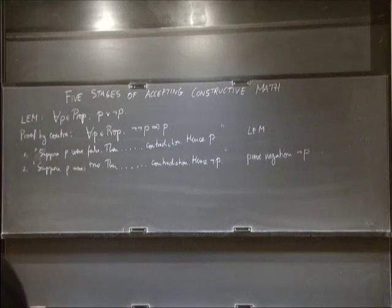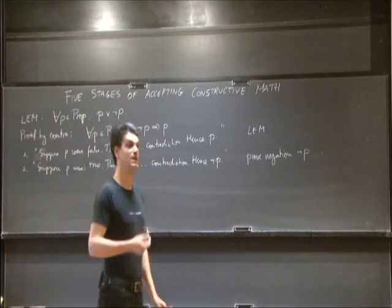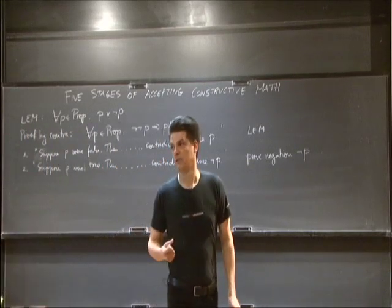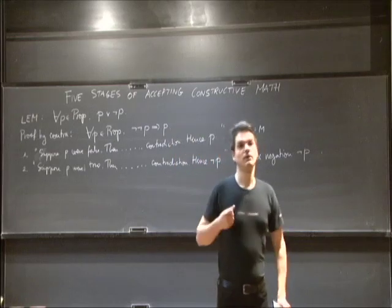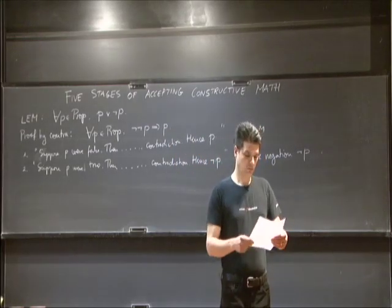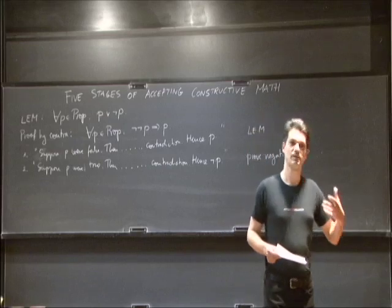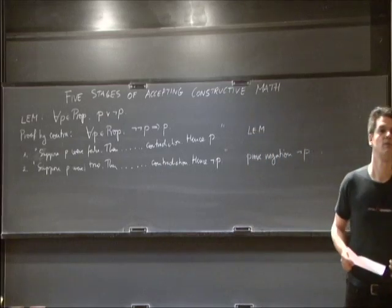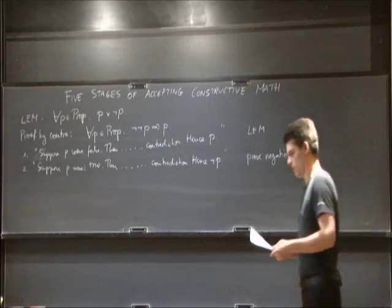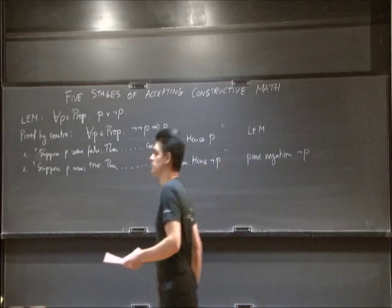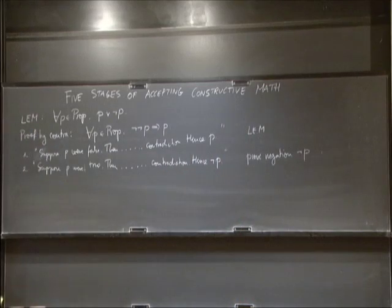Another thing you might think is that because in constructive mathematics we do not accept the law of excluded middle, we deny it. This is not the case. Constructive mathematics keeps silent about the law of excluded middle — we do not accept it, we do not deny it, we just don't use it. Particular cases of the law of excluded middle might be OK, but you have to establish them first.